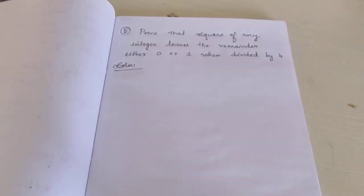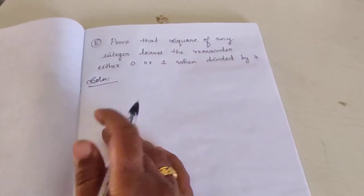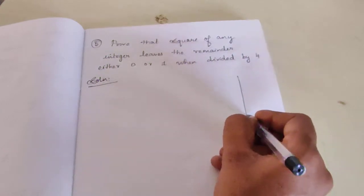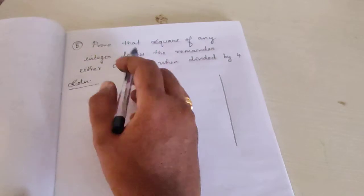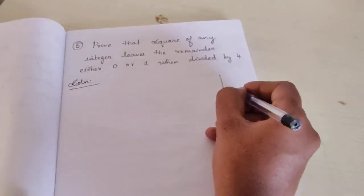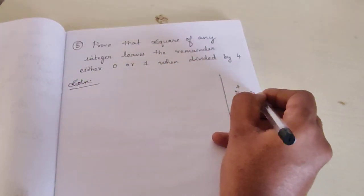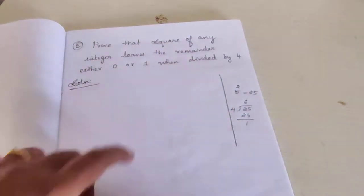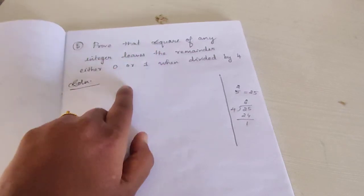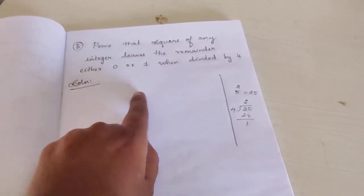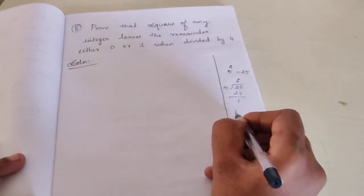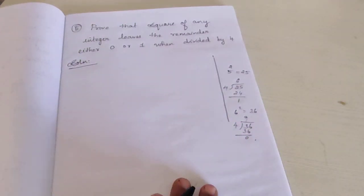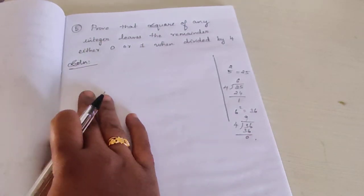Fifth question: Prove that the square of any integer leaves the remainder either 0 or 1 when divided by 4. Let's see practically. Take integer 5: 5 squared is 25. Divided by 4: 6 fours are 24, leaving remainder 1 — correct. Take integer 6: 6 squared is 36. Divided by 4: 9 fours are 36, leaving remainder 0. So when we take the square of an integer, it leaves remainder 0 or 1 when divided by 4.